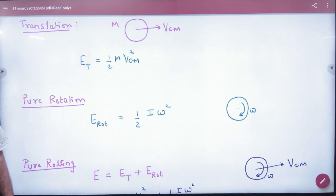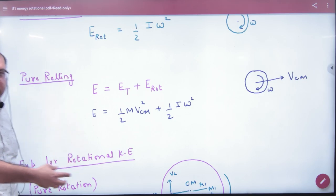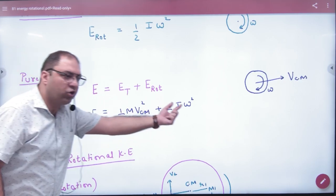If the body rotates in pure rotation, what will happen? Half I omega squared. But if a body rolls, the body will translate and rotate. So, the total energy formula: sum of translation and rotation.